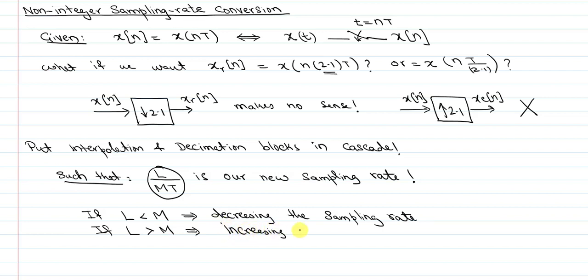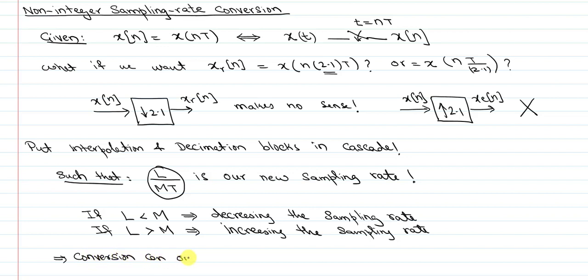For example, if we want to increase the sampling rate by a factor of 2.1, then we pick values of L and M — there is no unique value. We can pick any L and M that gives us a ratio of 2.1. Now, this means that conversion can only happen by rational factors, because the conversion is by L over M. So we cannot have a sampling rate change by a factor of, say, the square root of 2, because that cannot be represented as a fraction of two integers.